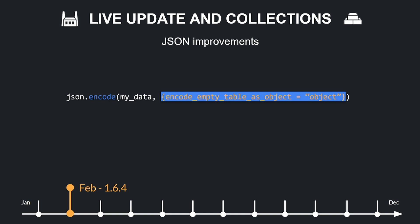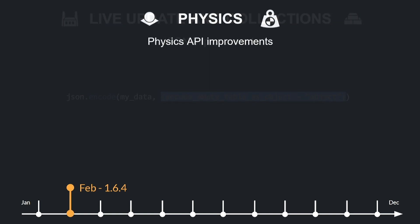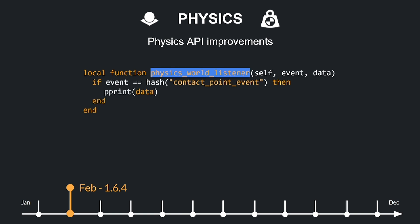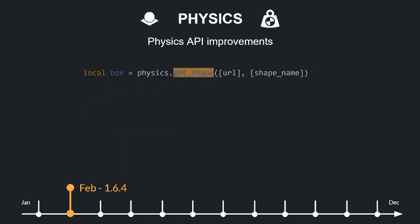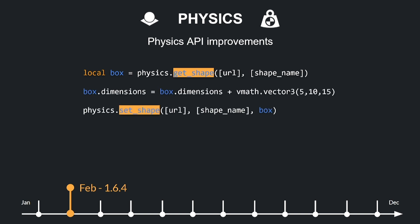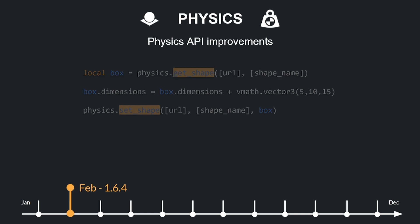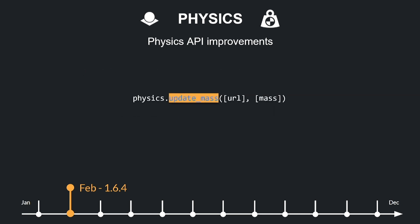Default now has a physics.set_listener function to receive all physics events — collisions, triggers — and handle them in a single function. Note that if the listener is set, physics messages will no longer be sent. This addition can vastly change how physics are handled in complex code. Moreover, this release brought more features for physics like functions to get and set shape, allowing you to dynamically change collision shape sizes at runtime, and a function update_mass to dynamically change the mass of a dynamic 2D collision object in the physics world.